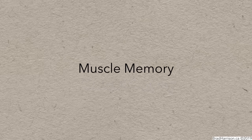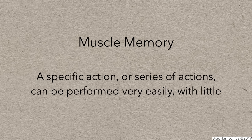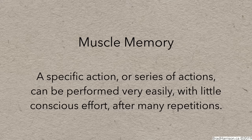You might have heard of muscle memory. The term is often used to refer to how a specific action or series of actions can be performed very easily with little conscious effort after many repetitions. Sometimes it happens almost by accident. We memorize and reproduce catchphrases and cliches effortlessly and without intention. If you're given the cue, your brain can't help but complete the phrase.